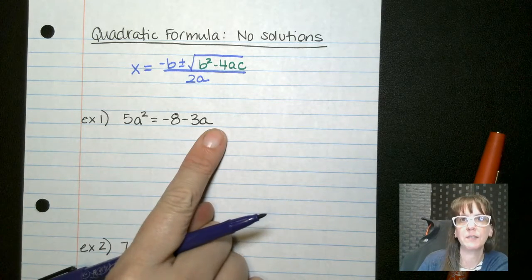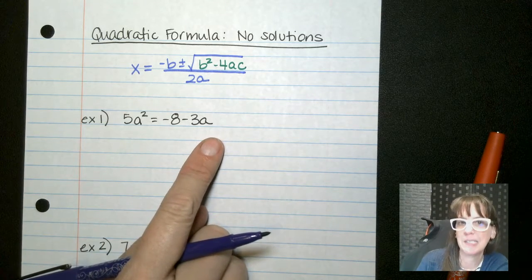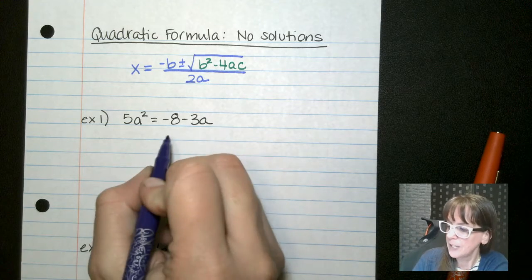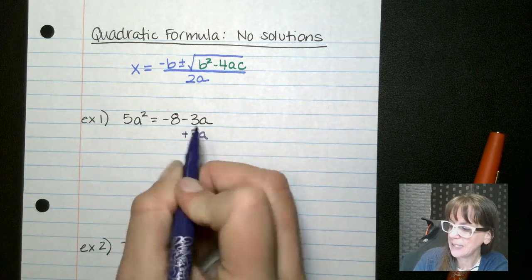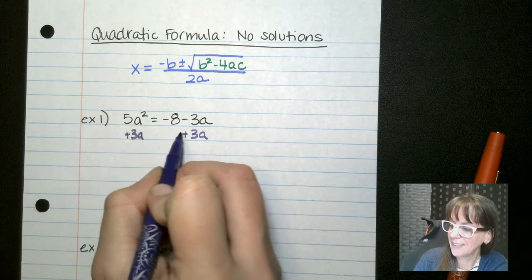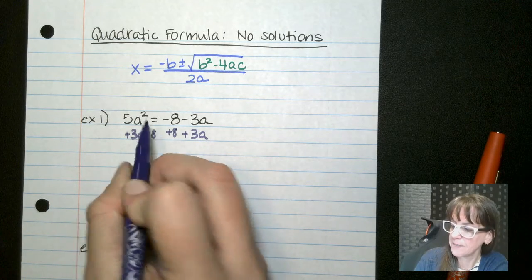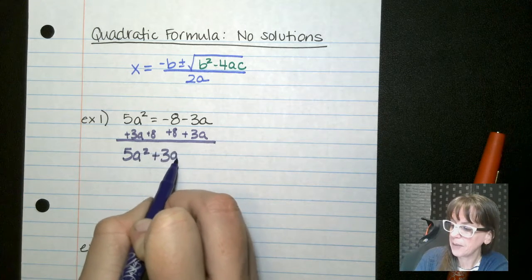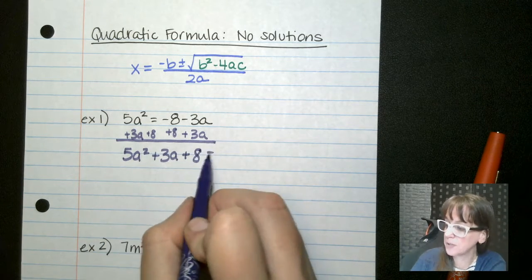Remember, we always want to get our equation into standard form, so get everything all on one side and set it equal to zero. So I'm going to add 3a and then plus eight plus eight. So this leaves me with 5a squared plus 3a plus eight equals zero.